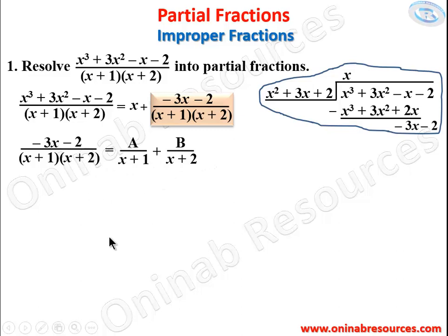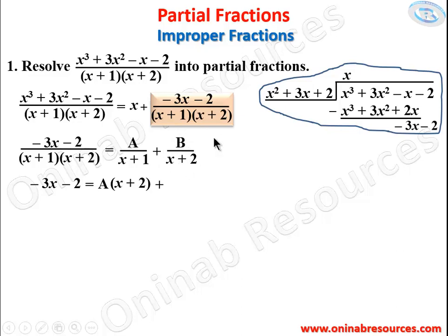We find the LCM, which is (x+1)(x+2), and multiply every term by it. The left side gives −3x − 2. On the right, (x+1) cancels from the first term leaving A(x+2), and (x+2) cancels from the second term leaving B(x+1). So we have: −3x − 2 = A(x+2) + B(x+1).